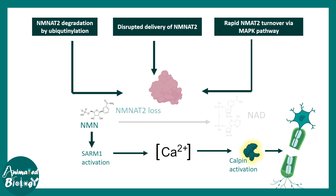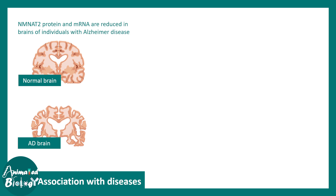So you now understand the overall mechanism involved in the Wallerian degeneration process. Two important components are NMNAT2 and SARM-1. SARM-1 is the executor molecule in this entire degeneration process.